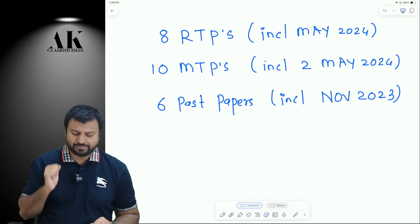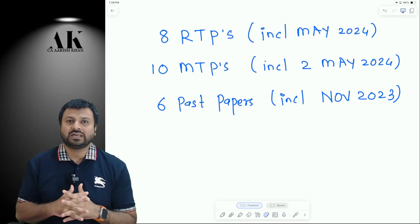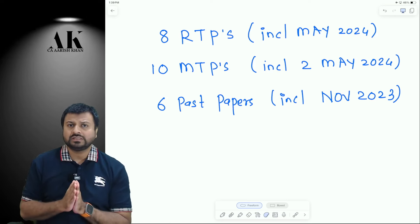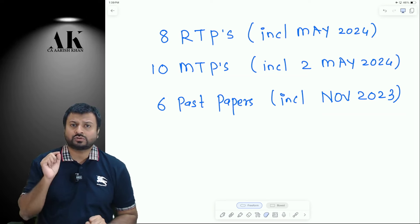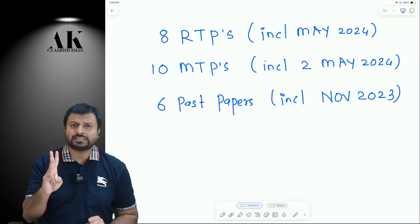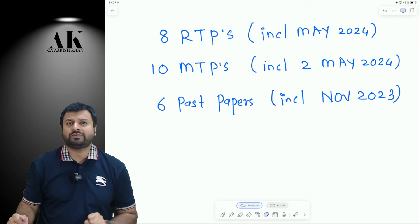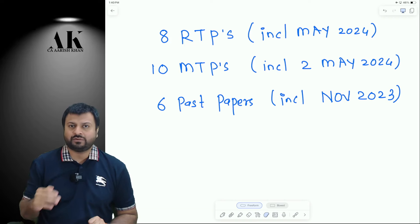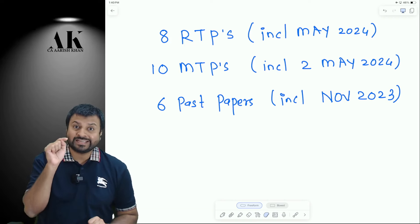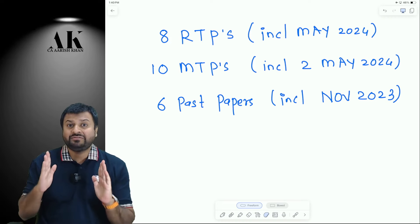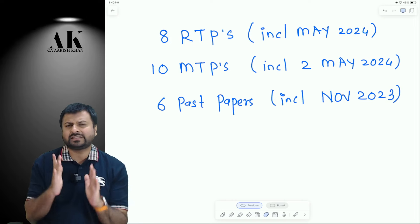I am talking about past RTPs, past MTPs, and past exam paper compilation — a quick revision of all these things in a span of four to five hours. In four to five hours, you cannot even solve one RTP, one MTP, and one exam paper. Here we are talking about eight RTPs including the May 2024 one, ten mock test papers including the two May 2024 mock test papers which are yet to come, and six past papers including the last attempt of November 2023. So in all, 24 papers we are going to revise in less than five hours.